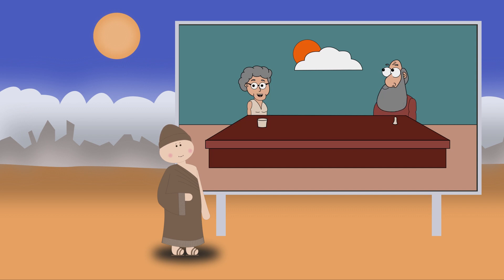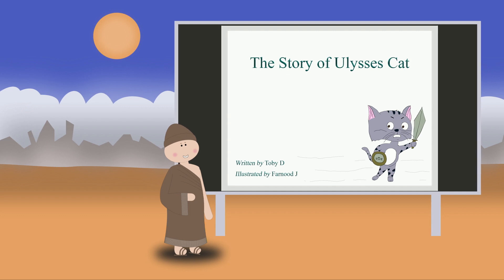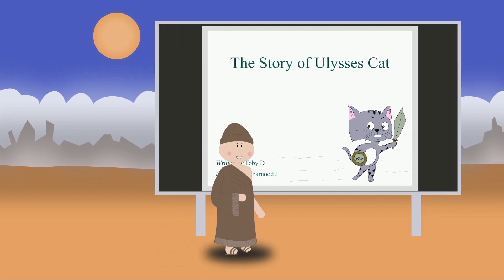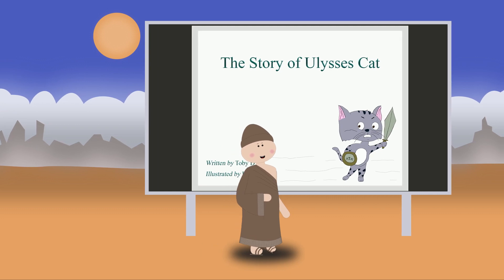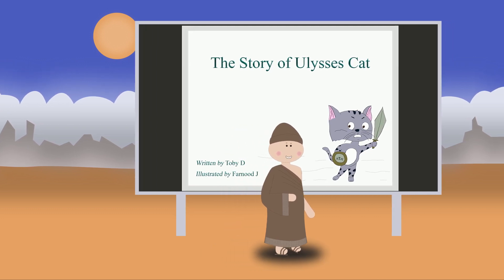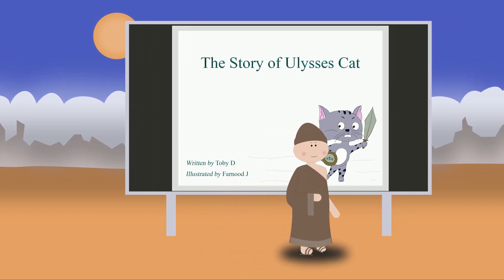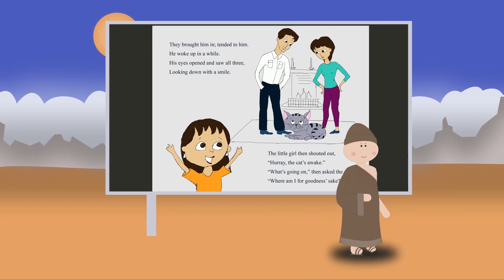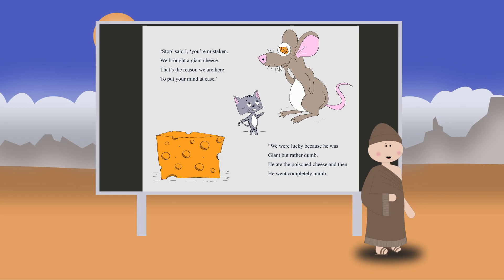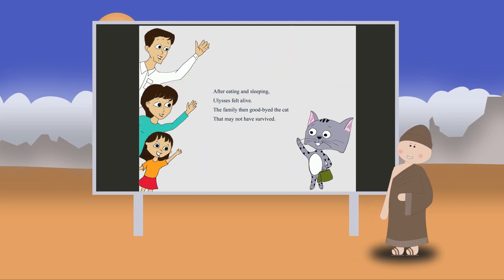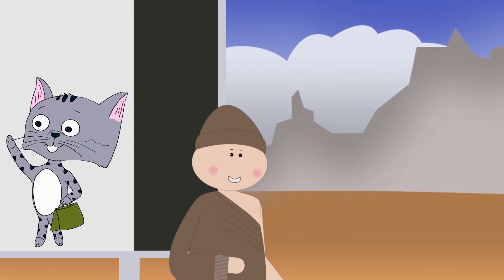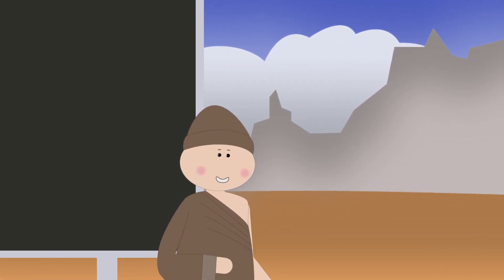Before we start, let me remind you that our new children's book, The Story of Ulysses Cat, is now available on Amazon. This is a kid-friendly version of Homer's Odyssey, a classic ballad, but told through the eyes of Ulysses' cat. Every page is accompanied by beautiful illustrations, making this a great story for kids of all ages. If you have any animation or illustration projects, please don't hesitate to contact us for further details.